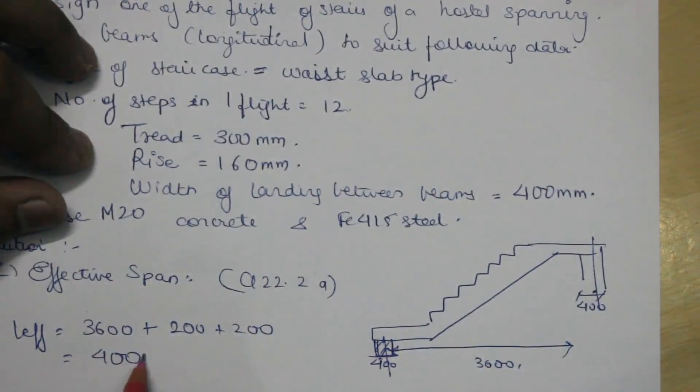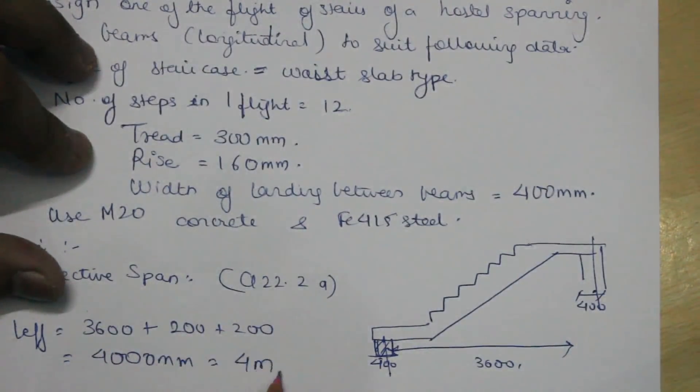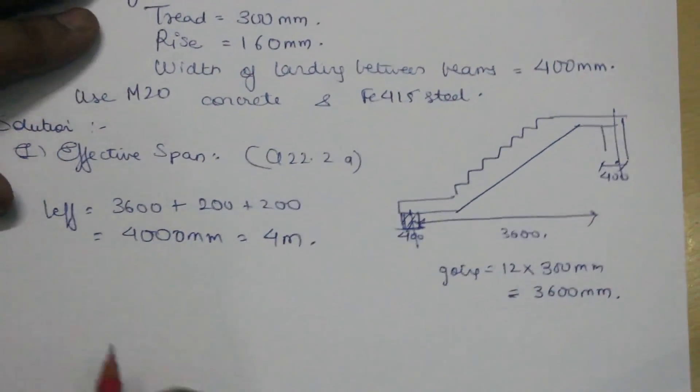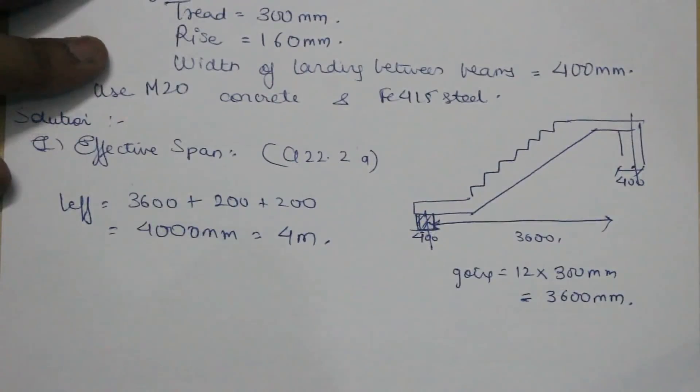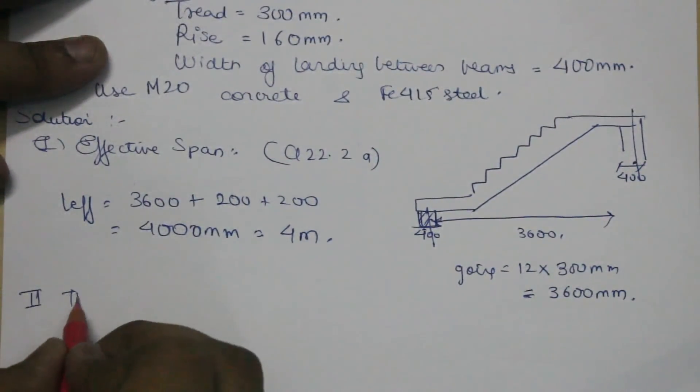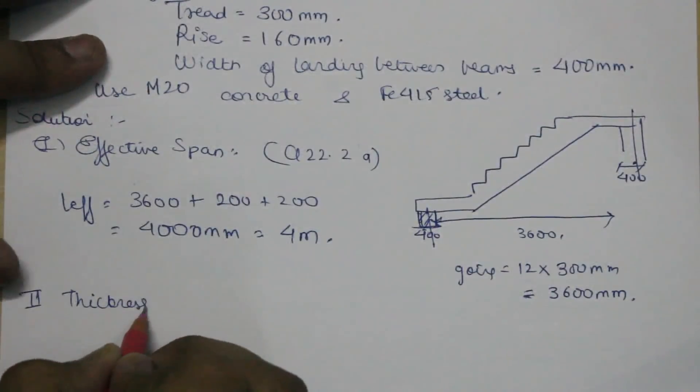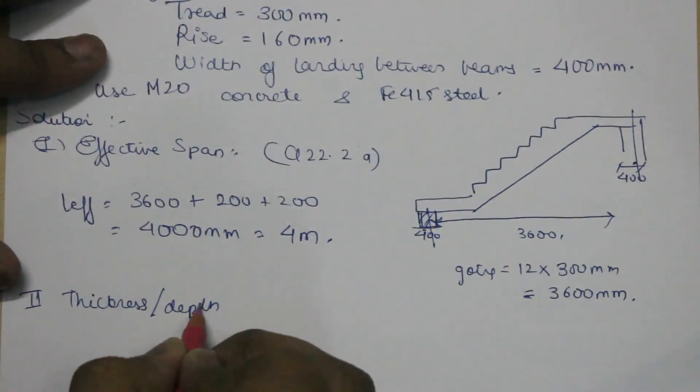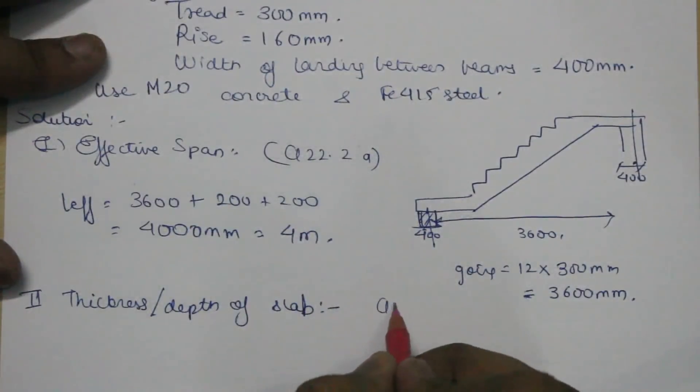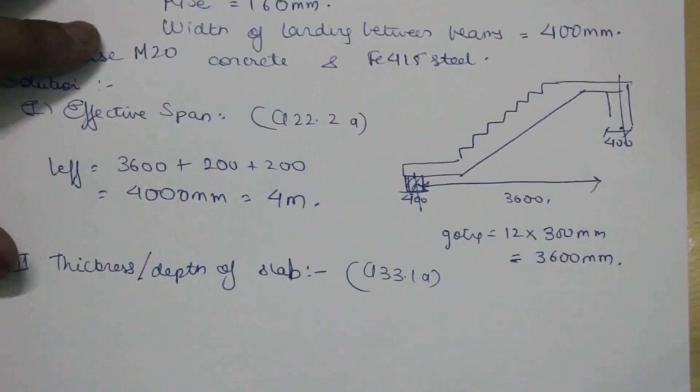Now the second step would be to calculate the thickness or the depth of the waist slab. Again, this will be based on clause number 33.1a using the span by depth ratio.